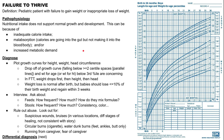If you notice a baby dropping off a growth curve — meaning falling below at least two percentile lines — and their height or weight for height are at the third percentile or below, that would be concerning for failure to thrive. For example, if a baby tracking along the 50th percentile suddenly drops to the fifth percentile, that's concerning. Similarly, if a baby has always been below the third percentile their entire life, that's also concerning.